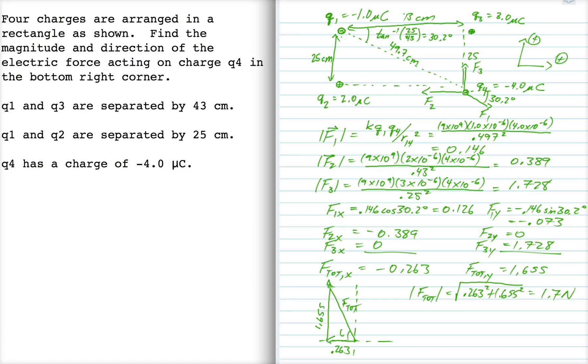And then the direction theta here is going to be some angle that's above minus x. And that's going to be the inverse tangent of opposite over adjacent, which is 81 degrees. Okay, so pretty simple vector combination, and we're done.